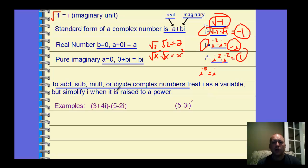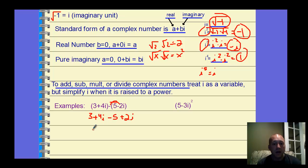For operations with complex numbers, just treat i as a variable. For this subtraction problem, distribute the negative through: you have 3 plus 4i minus 5 plus 2i. Combine like terms to get negative 2 plus 7i, and we're done. Just treat i as a variable.